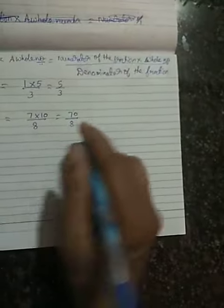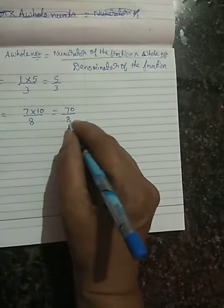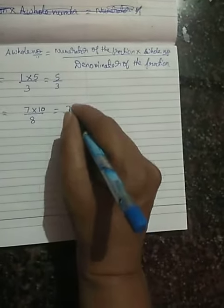So 7 × 10 = 70 by 8. If you simplify: 2 fours are 8, 2 threes are 6, 2 fives are 10.